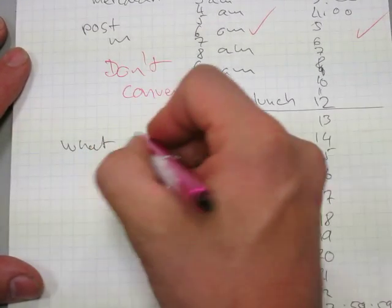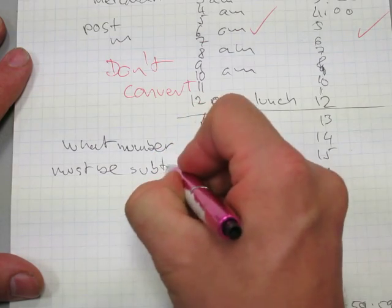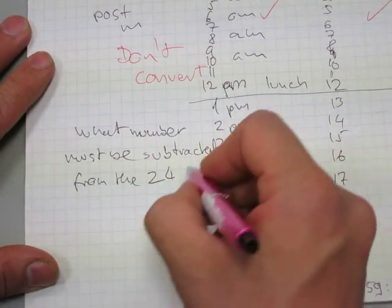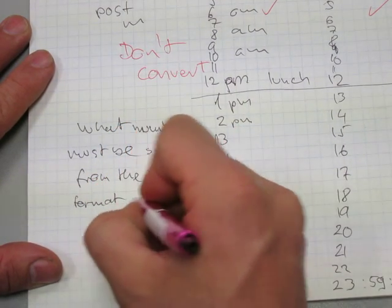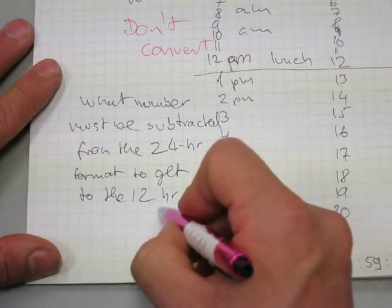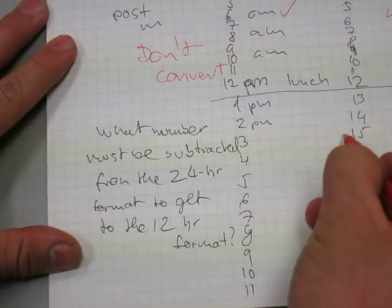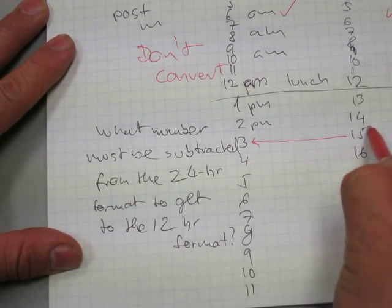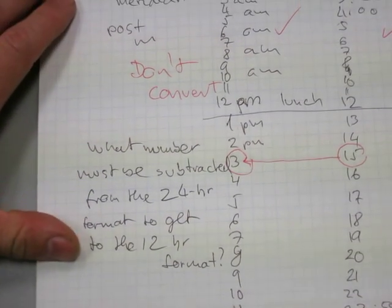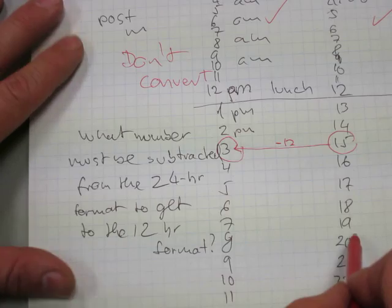what number must be subtracted from the 24-hour format to get to the 12-hour format? What is the number? Well, 15 to get to 3, you have to subtract 12 from it. Let's try another one.